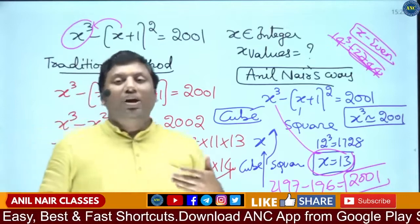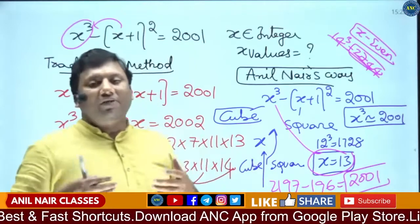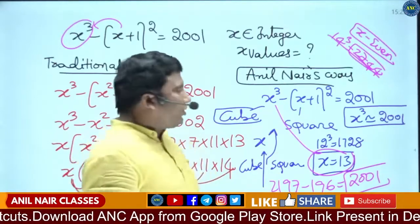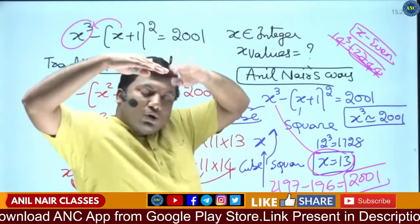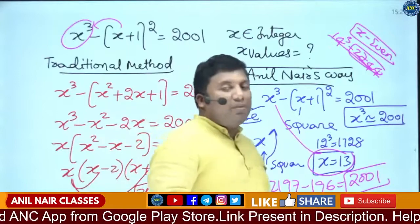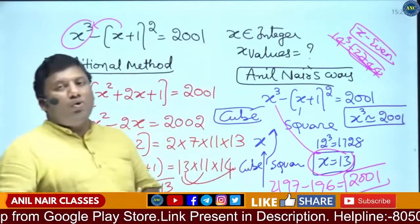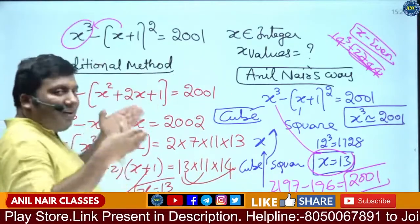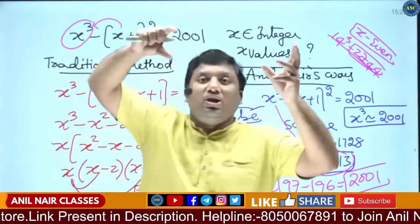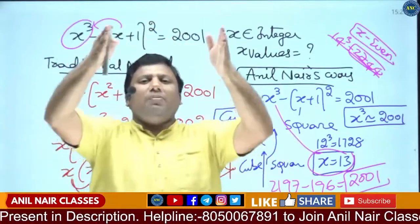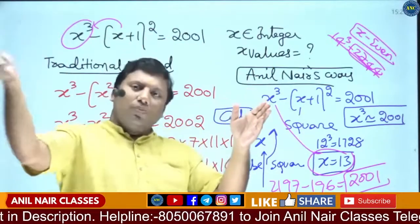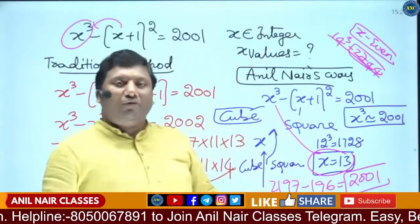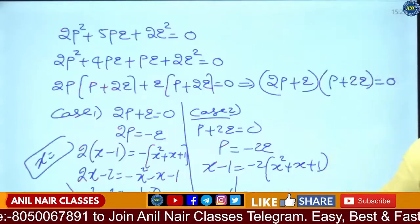If you are good at finding the cube of a number you will get the answer very fast. 11 cube is 1331 — if you subtract from that, the value cannot be 2001. 12 cube is 1728 — still subtracting cannot give 2001. 13 cube is 2197, minus 196 gives 2001. Whenever you get this kind of question where one term is cube and another is square, the square value will be very small. You can check by taking sample values: 3 cube is always greater than 2 cube, 5 cube is 125 and 4 cube is 64.